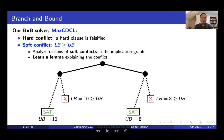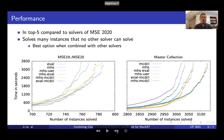In this work, we introduce the notion of soft conflict to represent the fact of a lower bound being bigger than the upper bound. We analyze the reasons of soft conflict in the implication graph to learn a clause to explain the conflict. This approach allows us to obtain the first competitive branch-and-bound MACSAT solvers for industrial MACSAT.